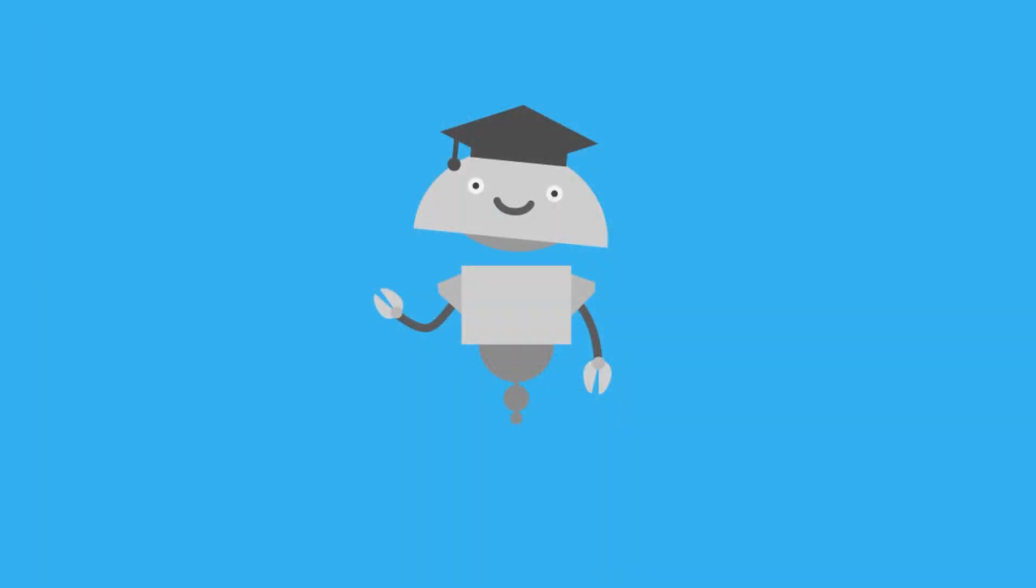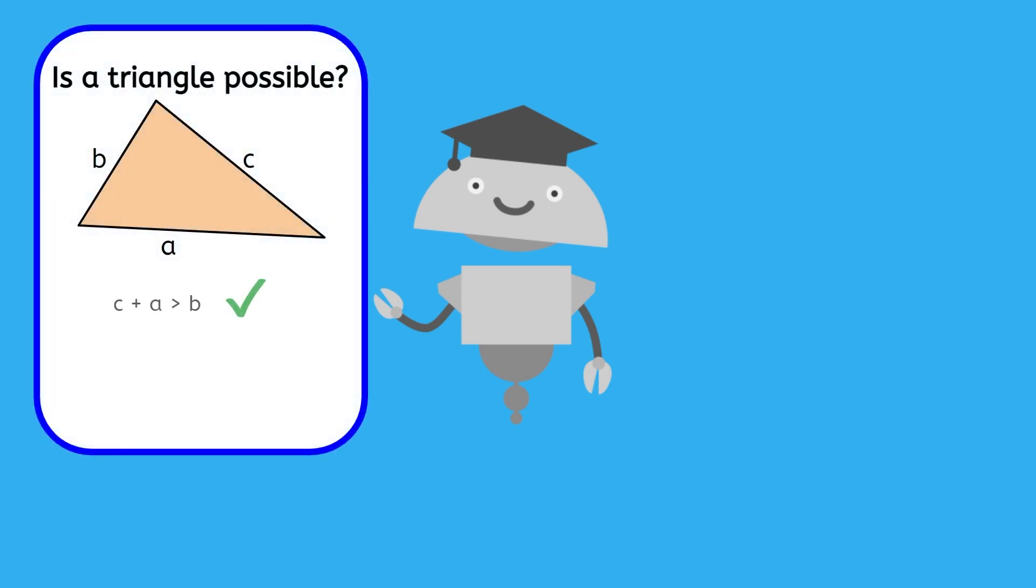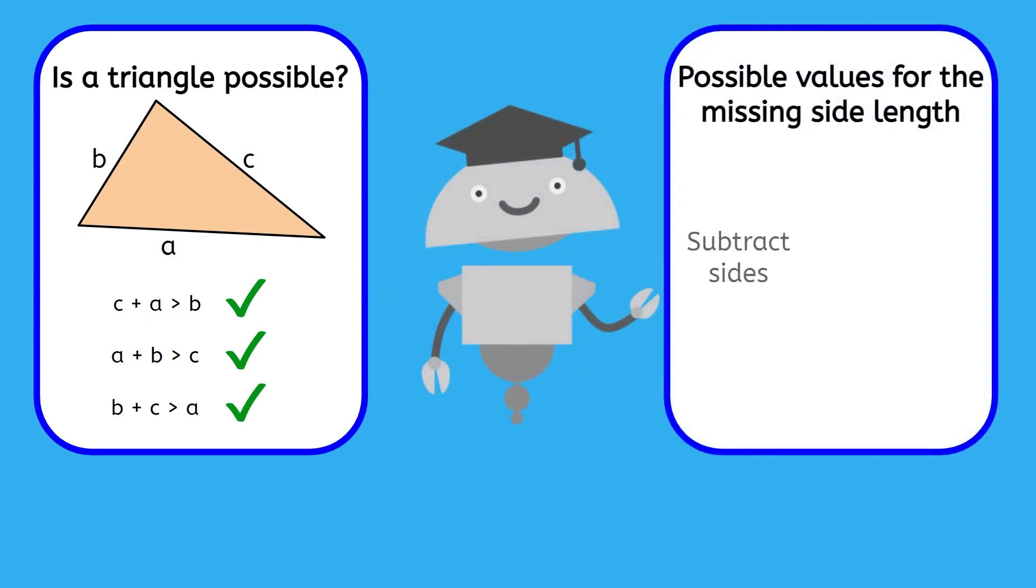Great job with your note taking. Now you can use the triangle inequality theorem to verify whether or not three side lengths can form a triangle, and use a shortcut that came directly from the triangle inequality theorem to find all possible lengths of a missing side. See you next time!